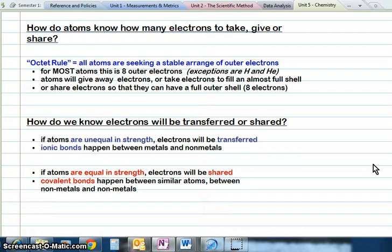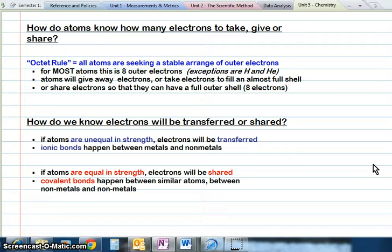How do atoms know how many electrons to take, give, or share? That's the octet rule we discussed last week. Atoms are seeking a stable arrangement of outer electrons. Stable is 8, except for hydrogen and helium which are stable at 2. Everyone else needs 8 valence electrons. Atoms are trying to get that full 8 outer shell.